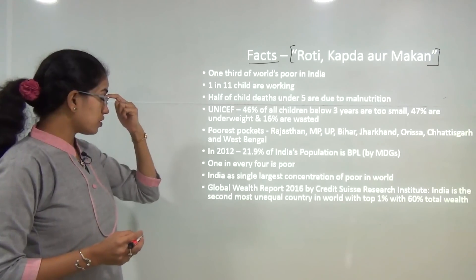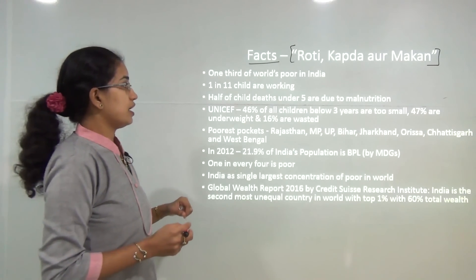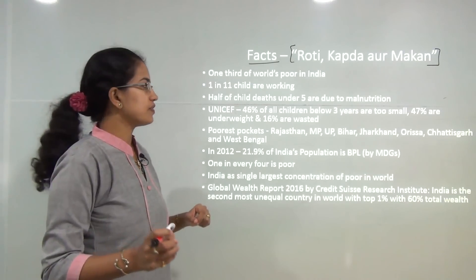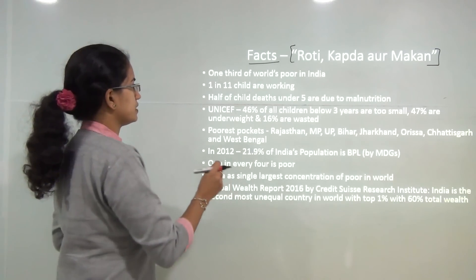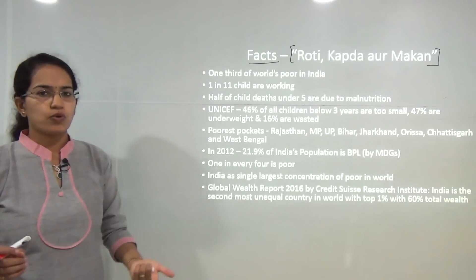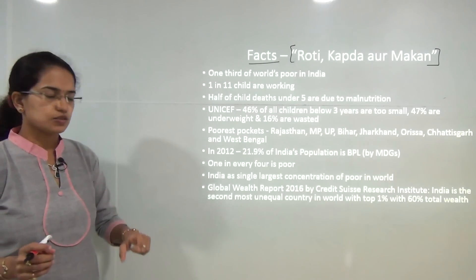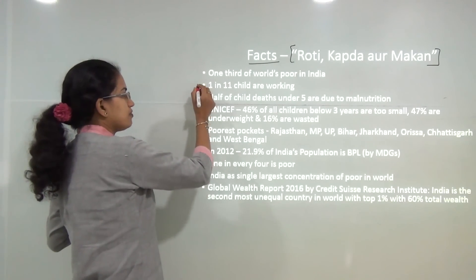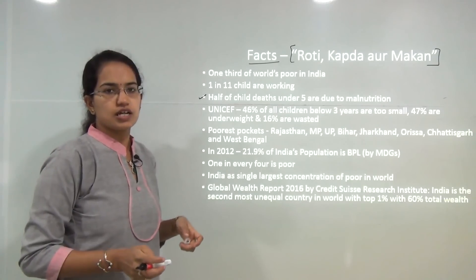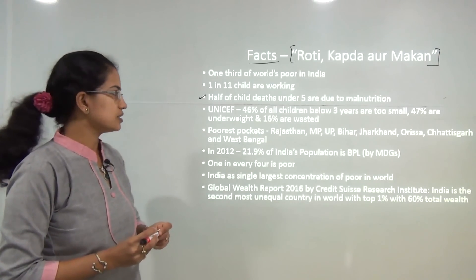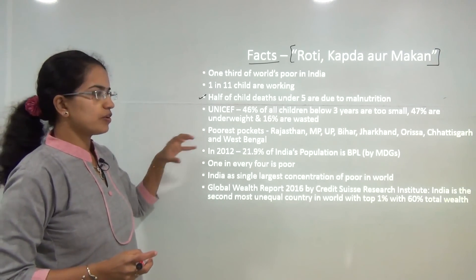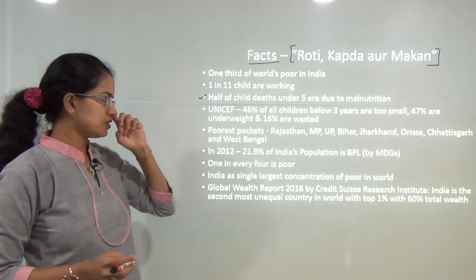Nearly one third of the world's poor live in India, of which every one in eleven children is working and every one in four persons is poor. Half of the children under five years are affected due to malnutrition. There are some pockets which are really poor.